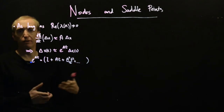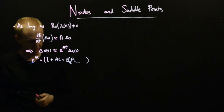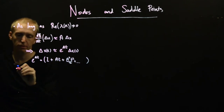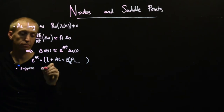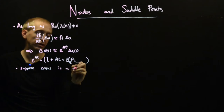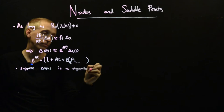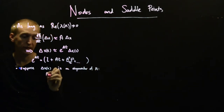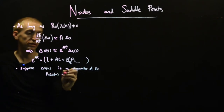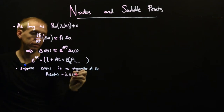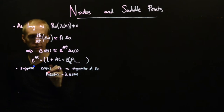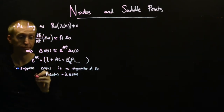We can now start to understand what's going on in terms of the eigenvalues and eigenvectors of the matrix A. Suppose that our initial condition delta x0 is an eigenvector of A. That means A times delta x at time 0 is equal to lambda times delta x of 0 — this is our eigenvalue lambda and our eigenvector. That tells us something interesting about the solution.